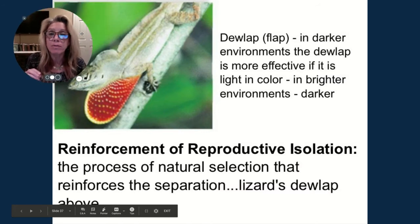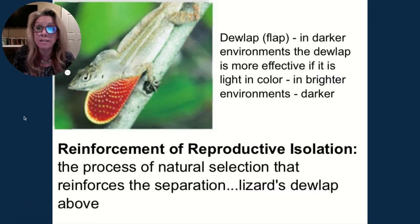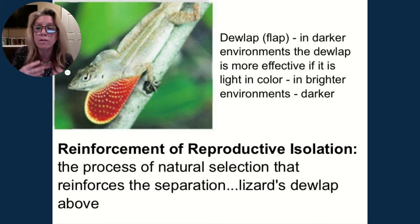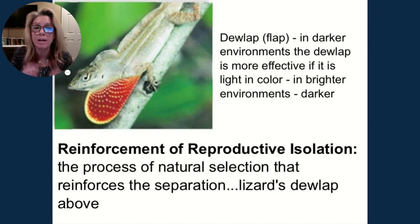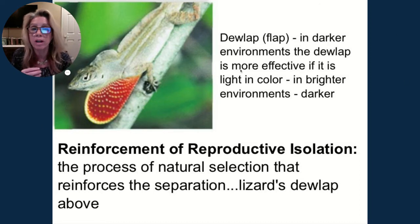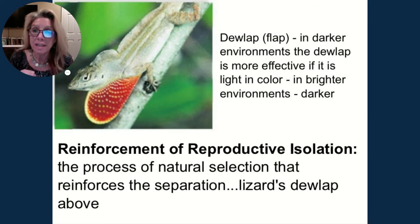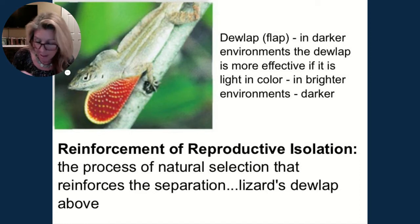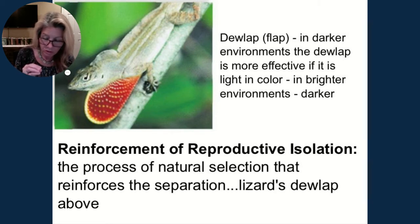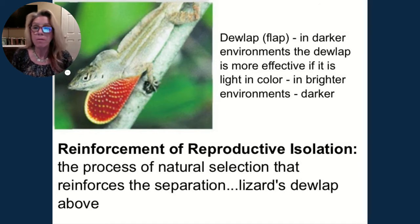Reproductive isolation is reinforced through success of staying separate — less competition, but also behaviors and coloration reinforce it. For example, dewlap color depends on your environment, whether it's dark or light, and to be successful you must maintain that difference. Reinforcement of reproductive isolation is the process of natural selection reinforcing differences in colors and behaviors that maintain reproductive isolation.